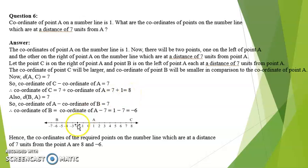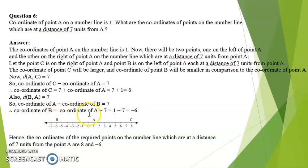On the left hand side, distance BA is 7. Coordinate of A minus coordinate of B equals 7, so coordinate of B equals coordinate of A minus 7, that is 1 minus 7, which equals minus 6. So both coordinates are 8 and minus 6.